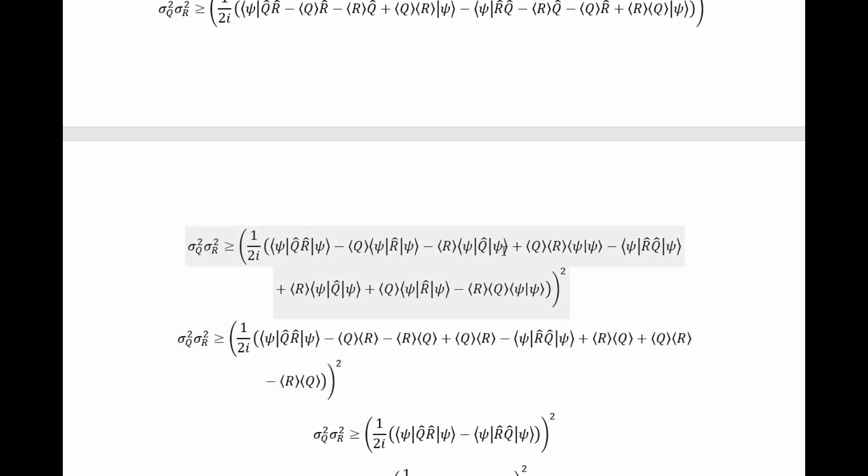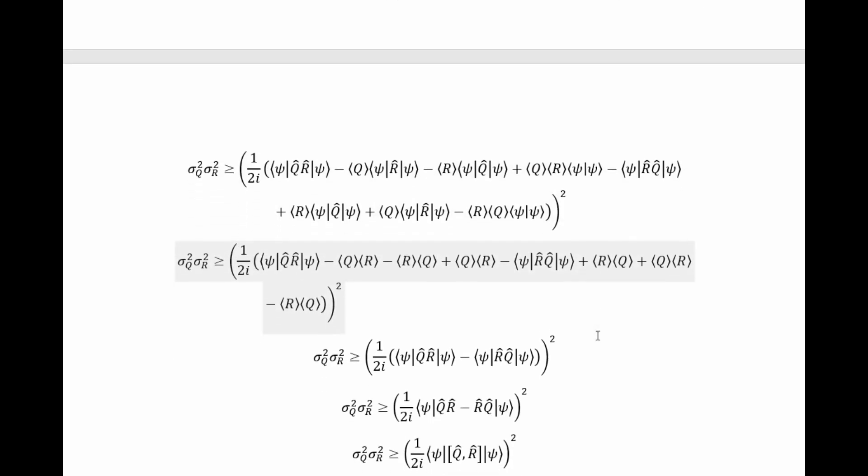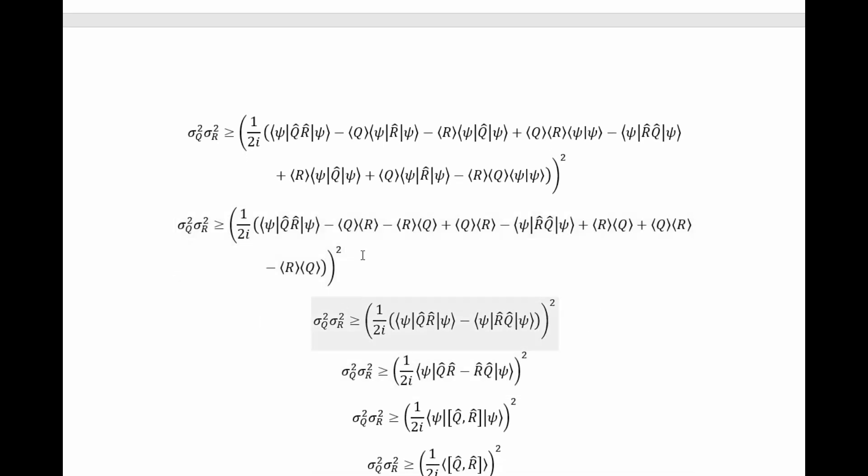Then, we find that we get expectation values showing up. And we also find that because these states are normalized, we get factors of 1 showing up in a few places. So, if we insert those facts in, we arrive here.